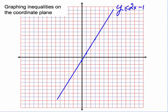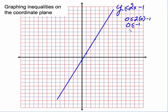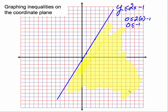Now we'll pick a point to test. We'll test the point (0, 0) again, because it is not on the boundary line. So we let y equal 0: 0 is less than or equal to 2 times 0 minus 1, which gives 0 is less than or equal to negative 1. That's false, so this point is not in the solution region. We shade the points on the other side of the line, and that is where all of the solutions lie.